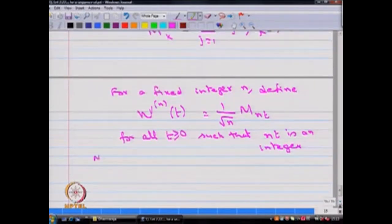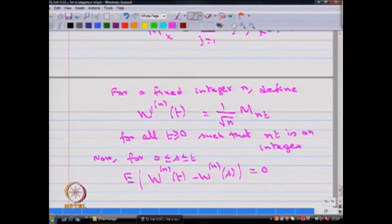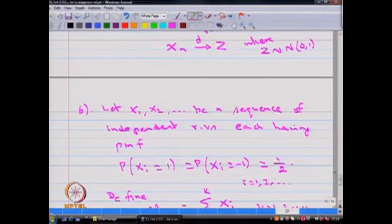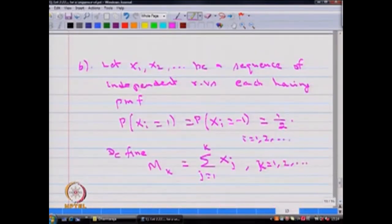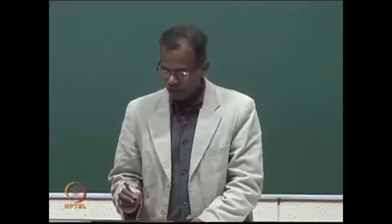If you find out the mean and variance for the difference W^n(t) minus W^n(s) for 0 ≤ s ≤ t, this quantity will be 0. Since W^n(t) = (1/√n) M_{nt}, and M_{nt} is a sum of Xi's where the probability of Xi equals 1 and the probability of Xi equals minus 1 are both 1/2, the mean of Xi's is 0. Therefore, the expectation of W^n(t) minus W^n(s) equals 0.